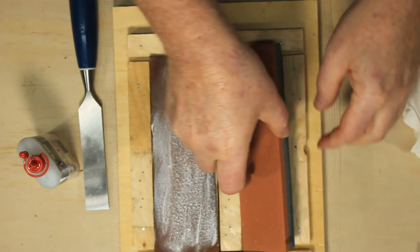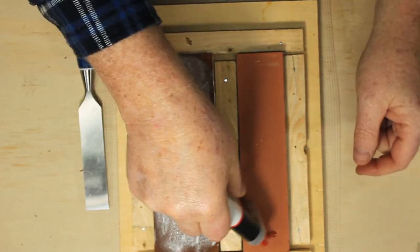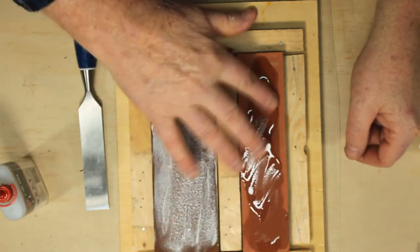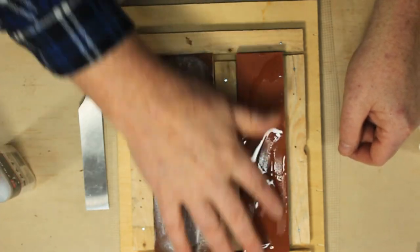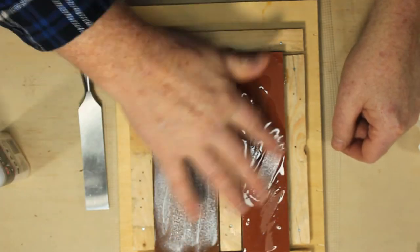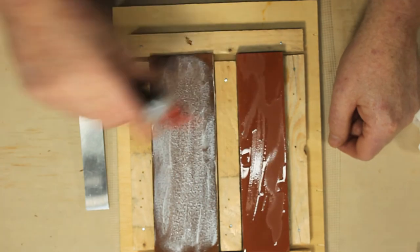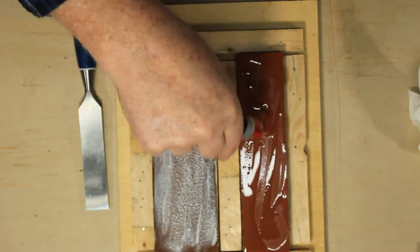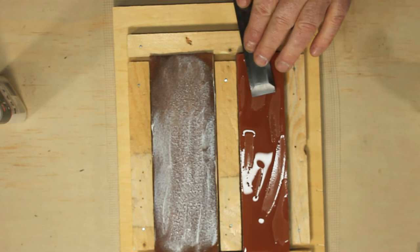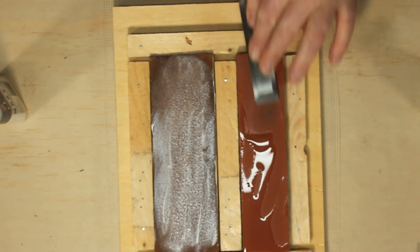Flip the stone over onto its fine side and oil it until the stone is saturated. Lay the back of the chisel flat on the stone. Then rub it back and forth to flatten the back and remove the wire edge.